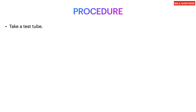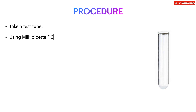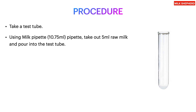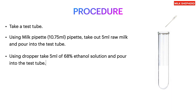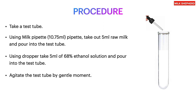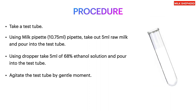For the procedure: first, take a test tube. Using a 10.75 milliliter milk pipette, take out 5 milliliters of raw milk and pour it into the test tube. Then, using a dropper, take 5 milliliters of 68% ethanol solution and pour it into the test tube. Agitate the test tube with a gentle motion and look for coagulation.